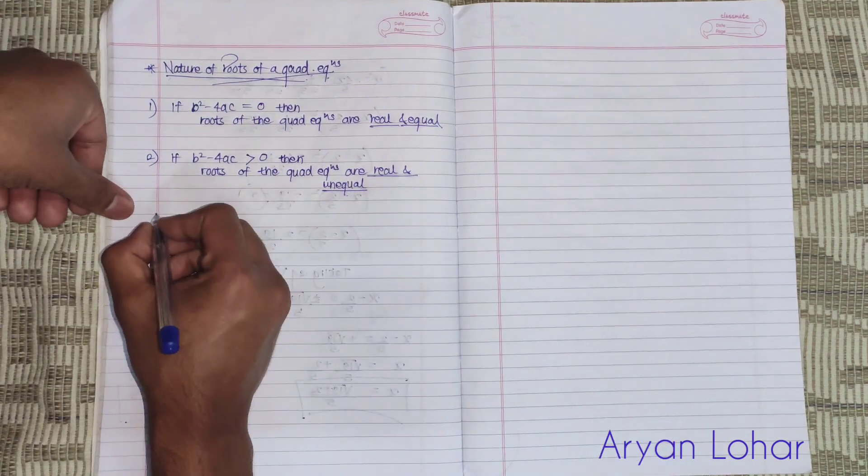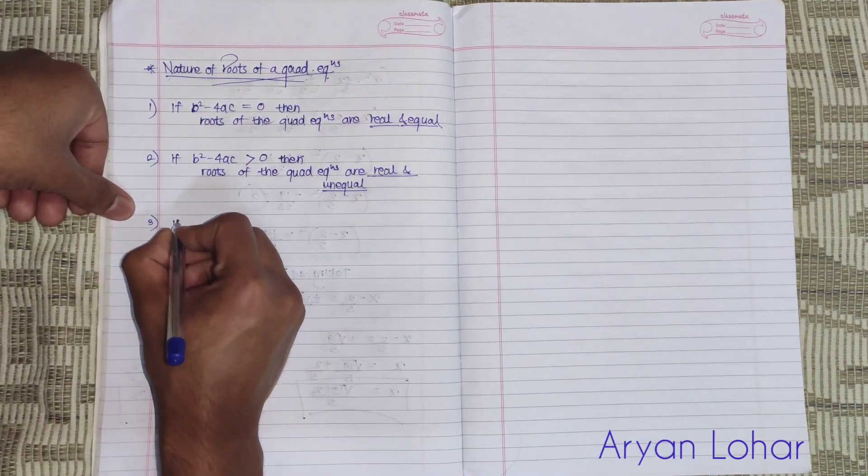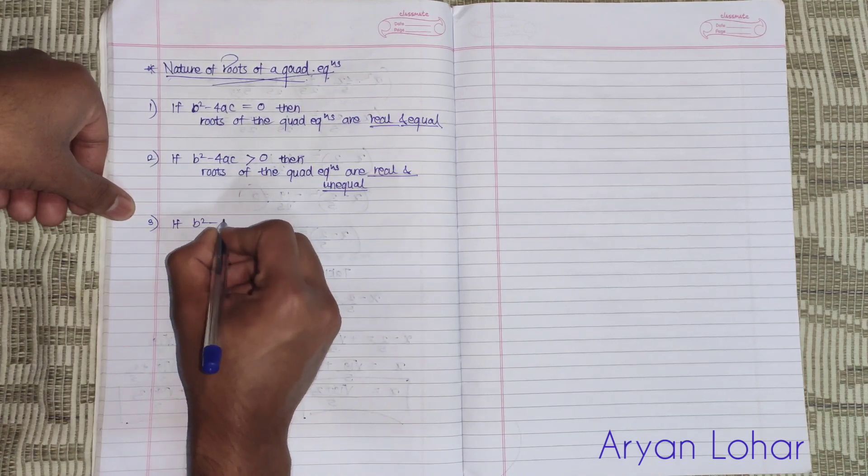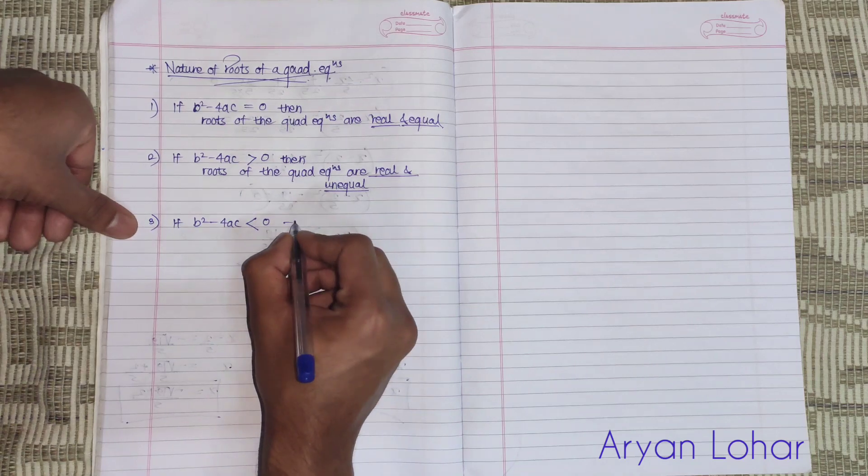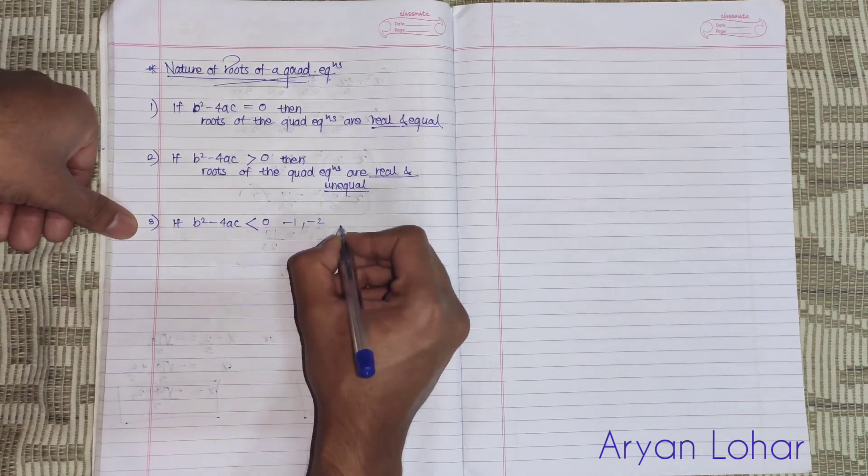And third one, that is last: b square minus 4AC is smaller than 0 - means in negative, minus 1, minus 2...